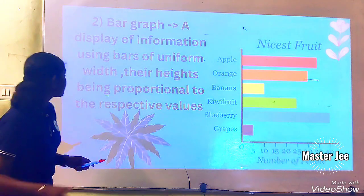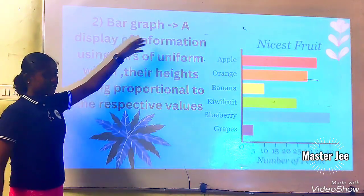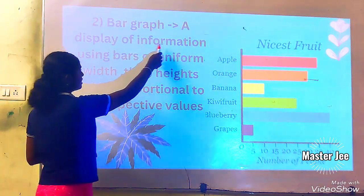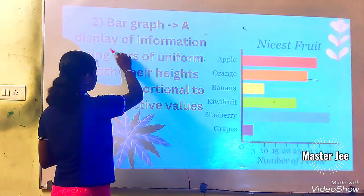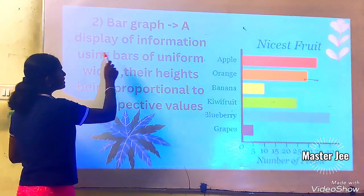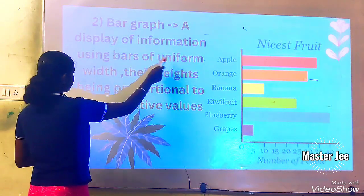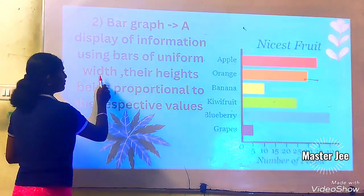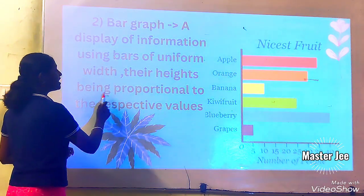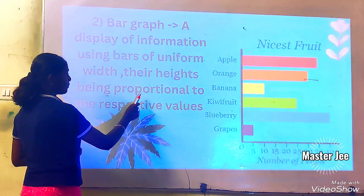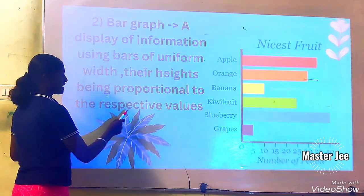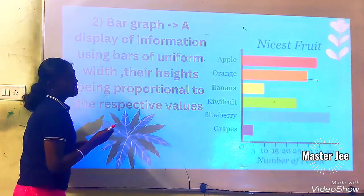The second type is bar graph. A bar graph is a display of information using bars of uniform width, with their heights being proportional to the respective values.